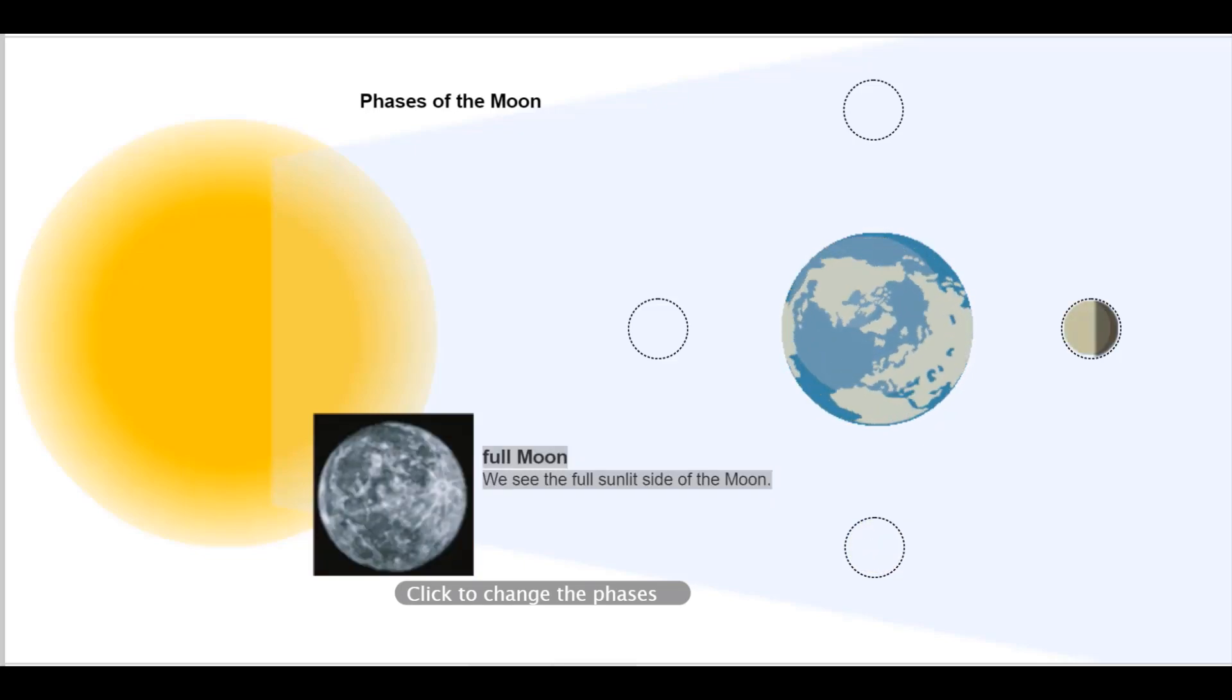Full moon. We see the full sunlit side of the moon. Luna llena. Vemos la cara iluminada por el sol de la luna al completo.